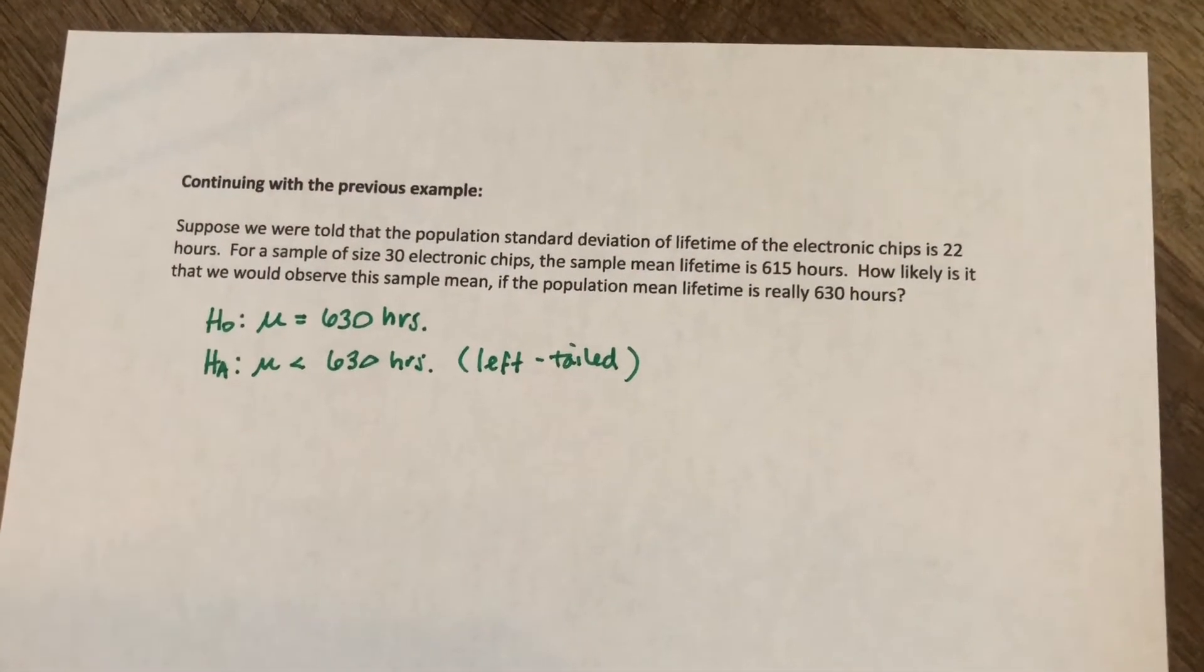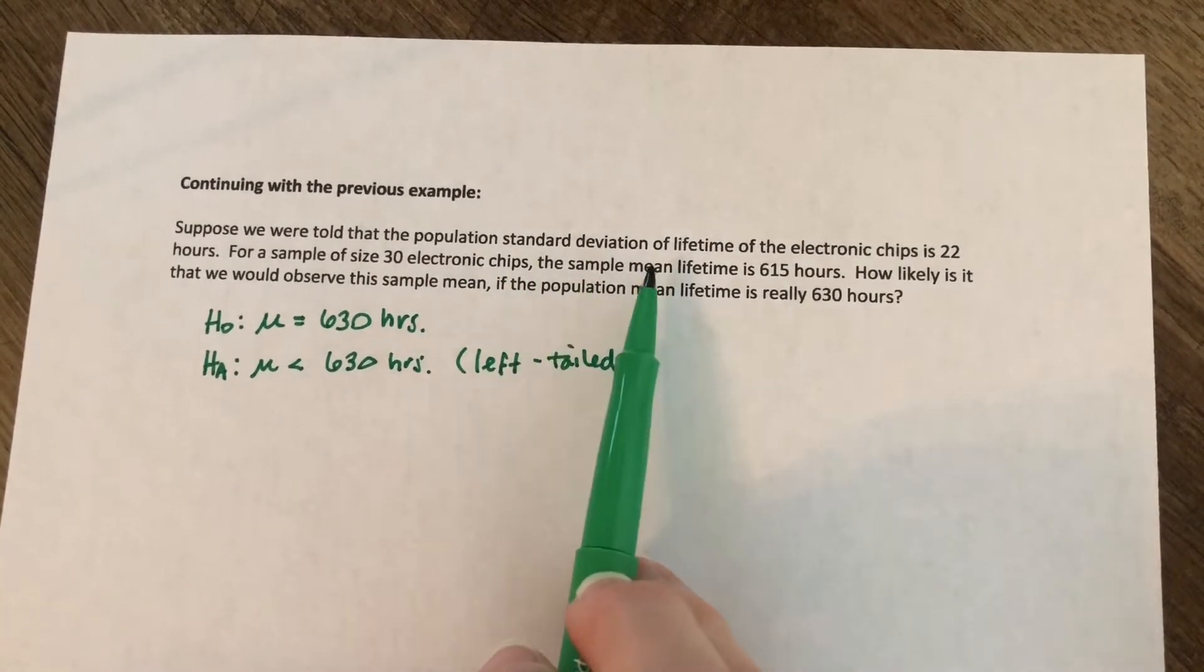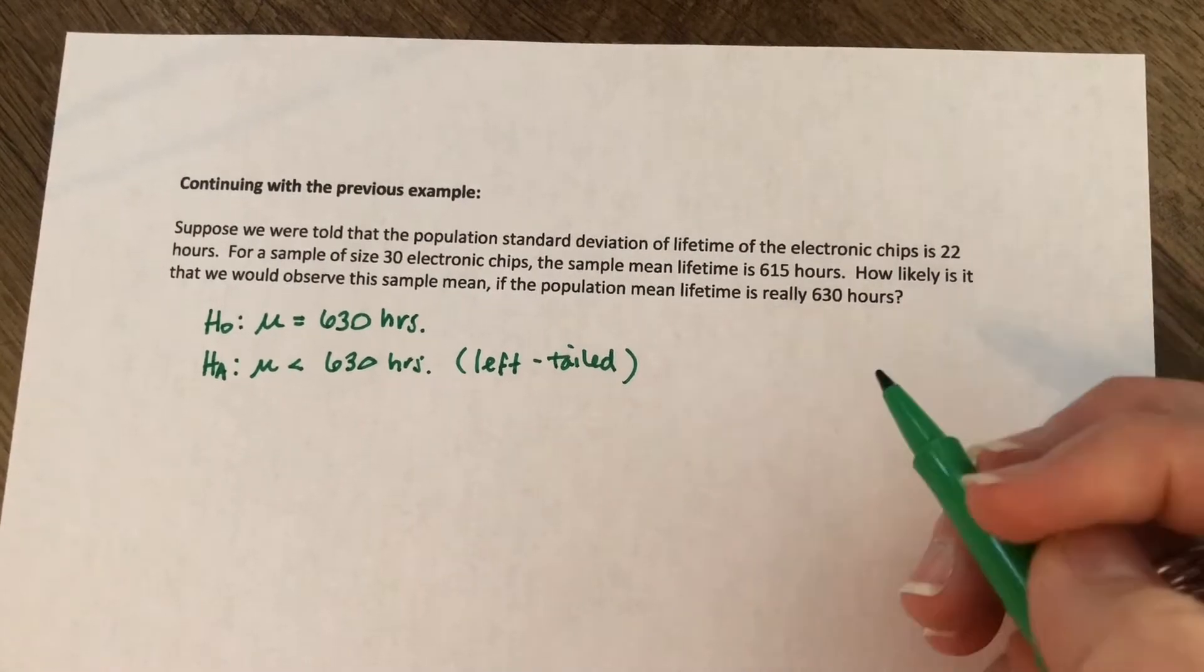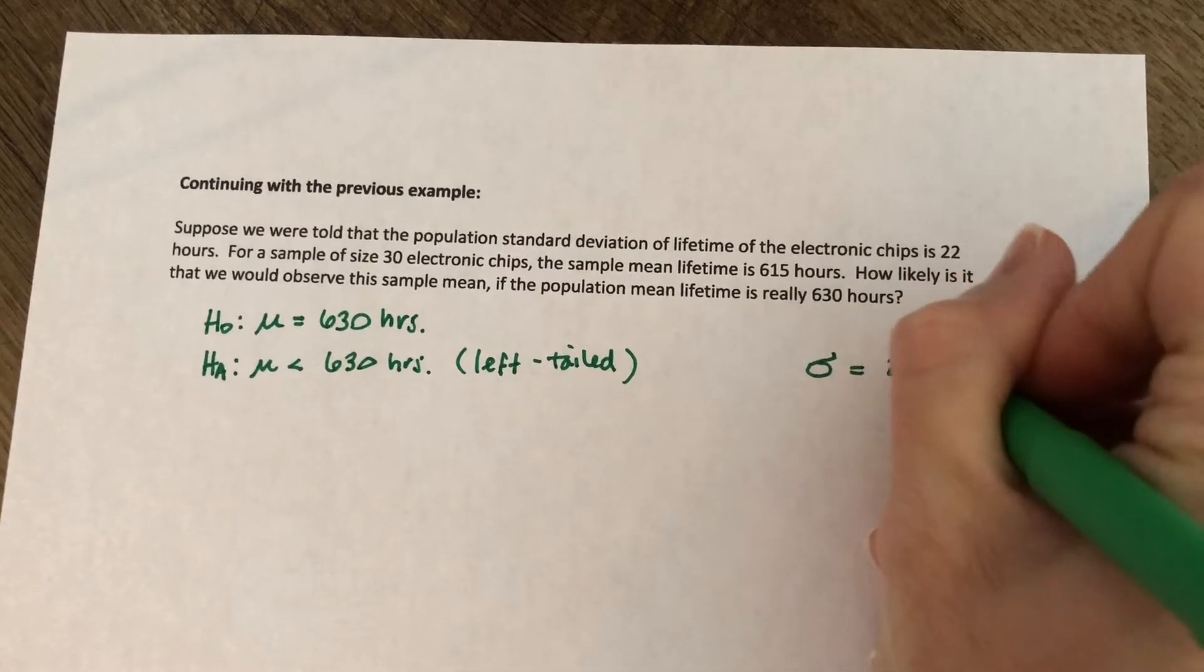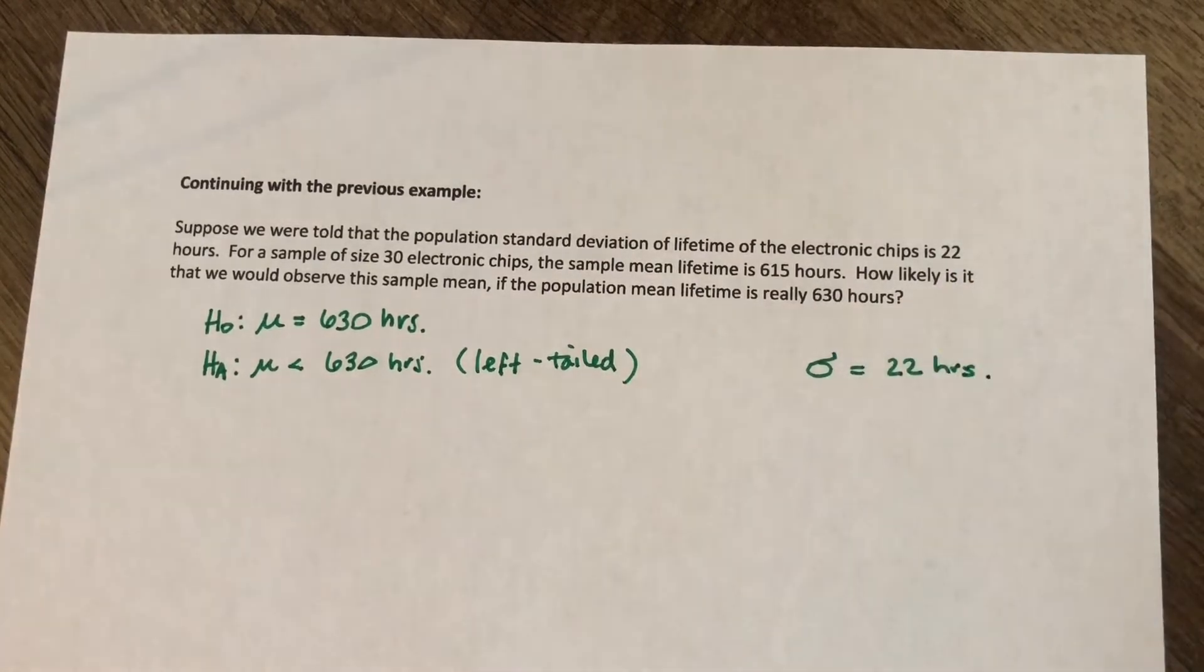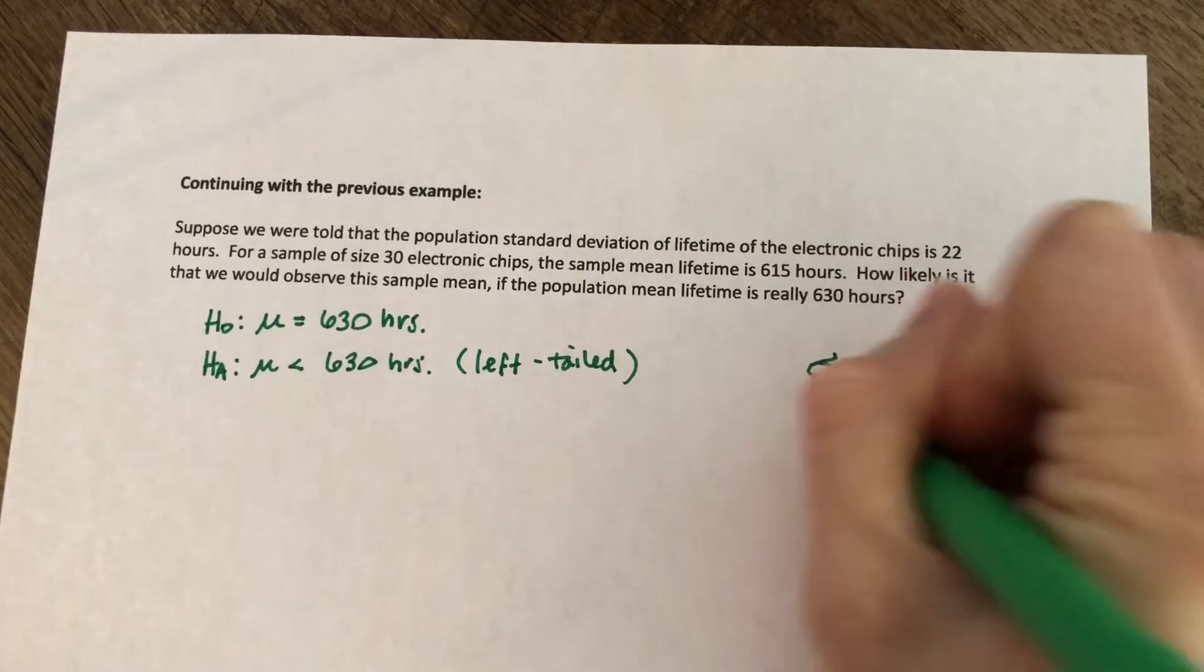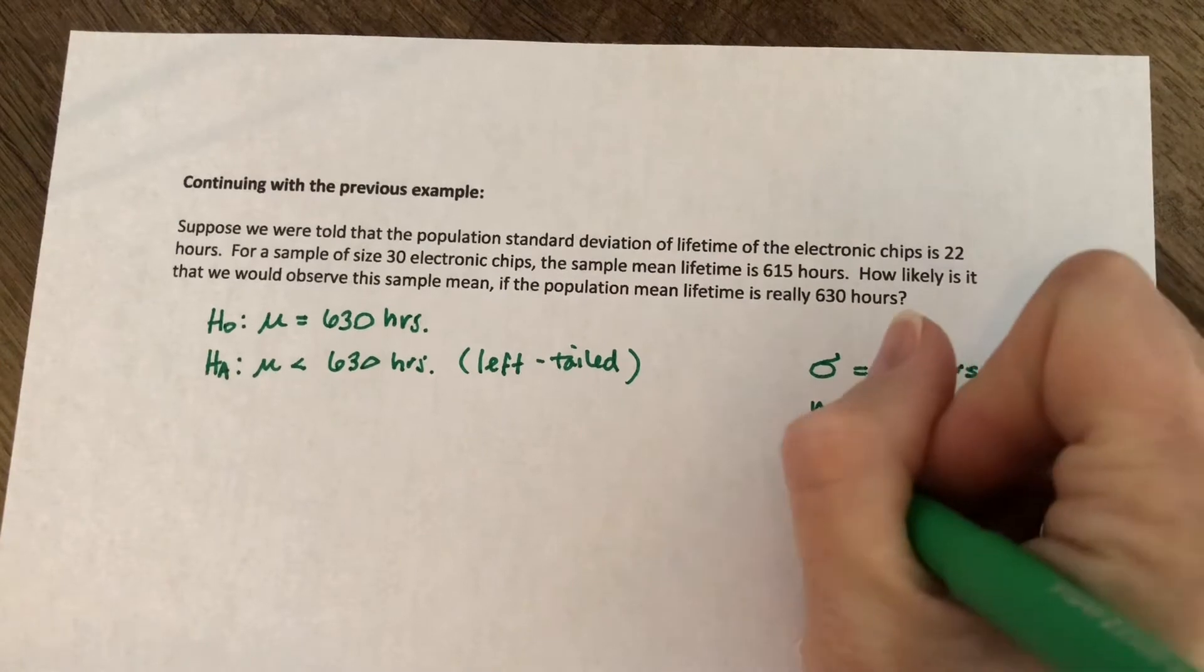So what we're asked in this question is, suppose we're told that we know the population standard deviation of the lifetime of electronic chips is 22 hours. So what they're telling us there is that sigma is 22 hours. And we are told for a sample of size 30 electronic chips, so n is 30.